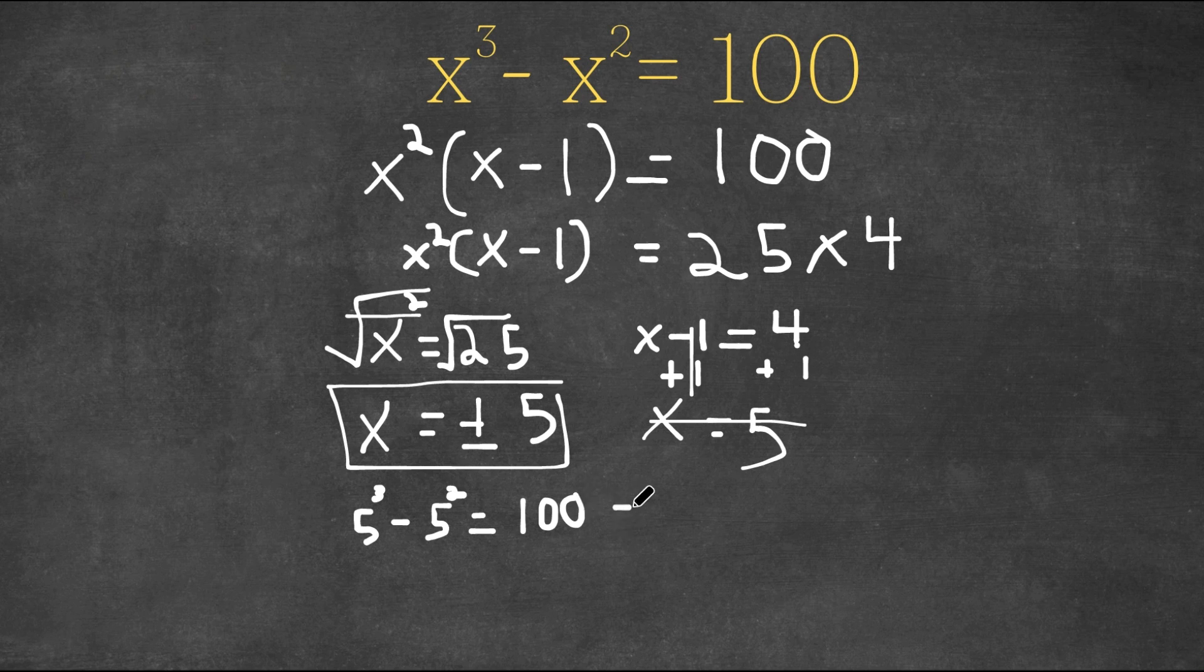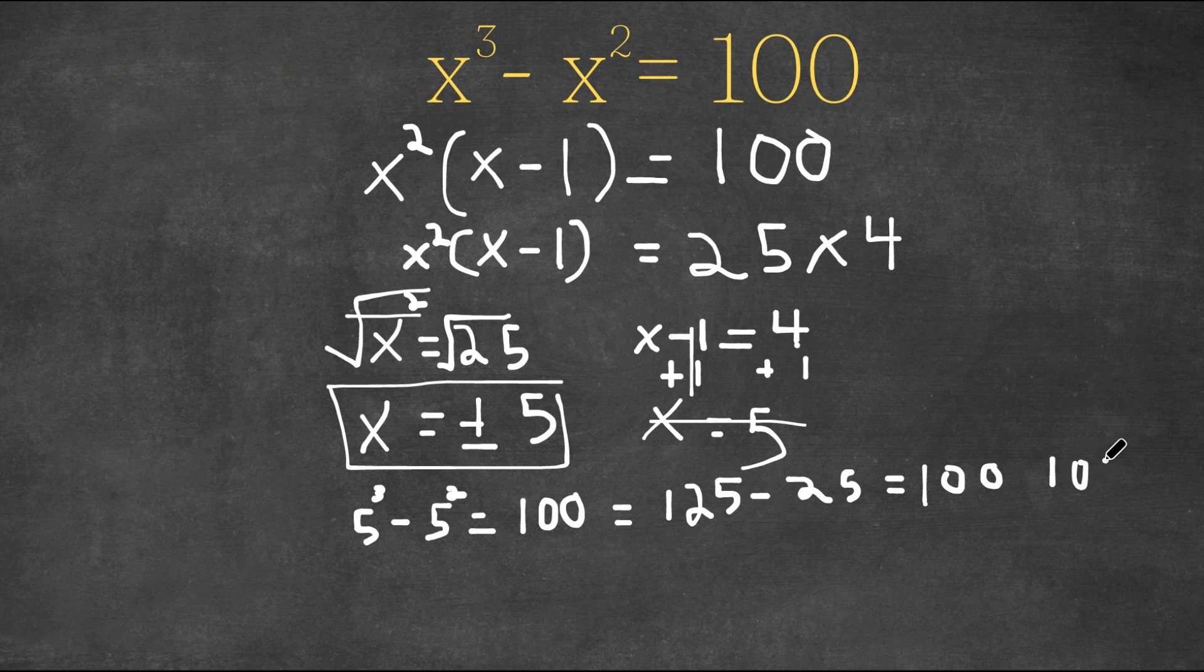Now, this would equal, well, 5 to the power of 3 is 125, and minus 5 squared is 25, and 125 minus 25 is 100. So 100 equals 100, and this is right, so 5 is a solution.